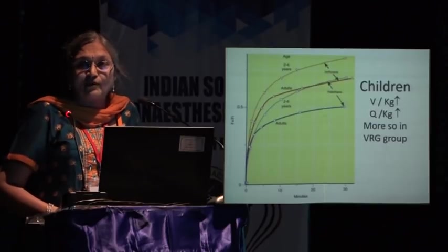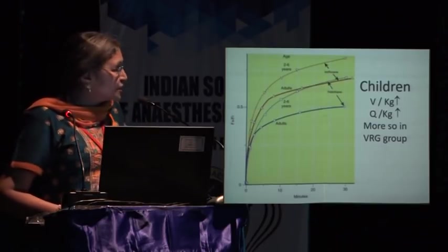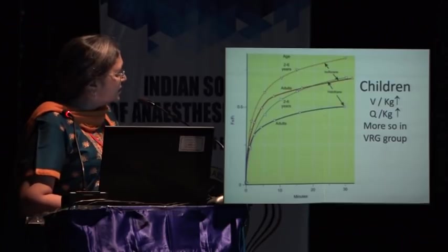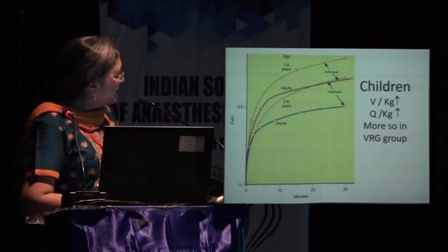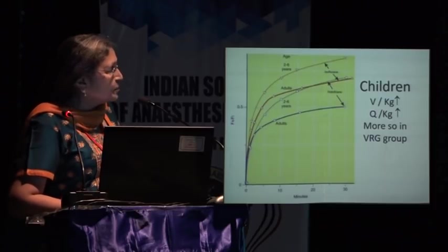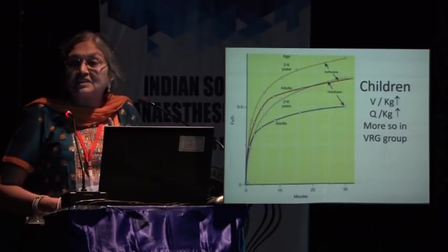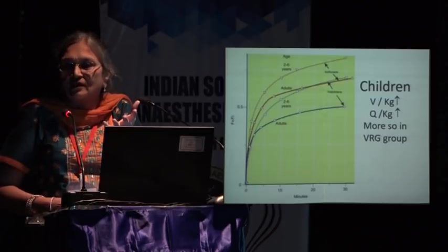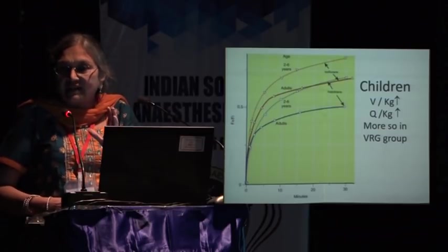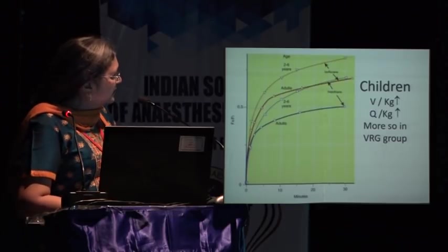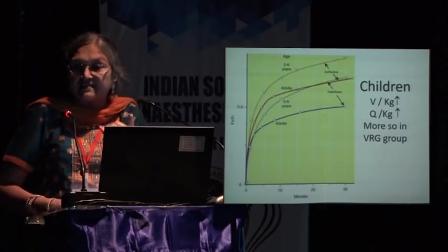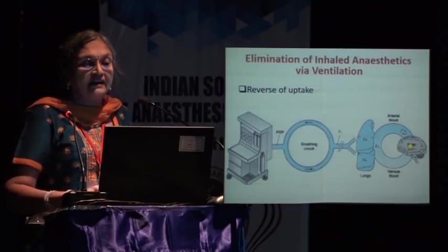In pediatric anesthesia, children have a higher ventilation per kg body weight and higher cardiac output, which should raise alveolar concentration faster. However, the higher cardiac output in children is proportionally even greater in the vessel-rich group. Overall, induction as well as recovery is much faster in children compared to adults.